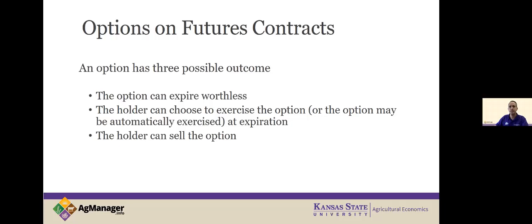The third option is that I can always sell back my option. As the option goes toward expiration, the premium will change. Whatever the market premium is for a $4.50 call on December 2021 corn, I can always sell that option back. You can compare what selling back the premium would give you versus exercising. So basically: expire worthless, get exercised, or sell it back.